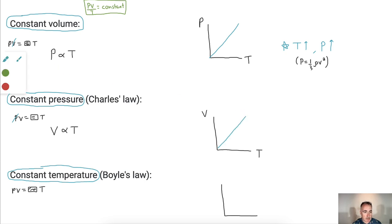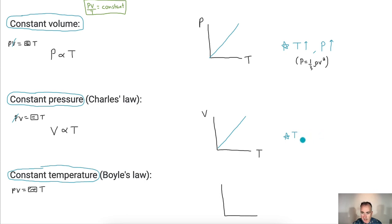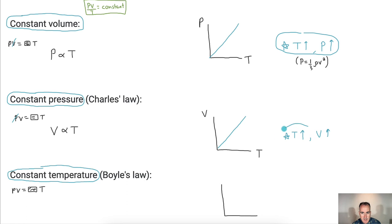We can conclude that as temperature goes up, the volume goes up. That explains how raising the temperature causes the gas to expand. Increasing the temperature increases pressure, or at constant pressure it expands the volume. These are the key takeaways from the constant-pressure case.